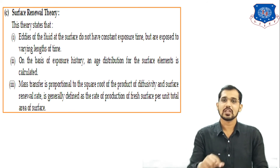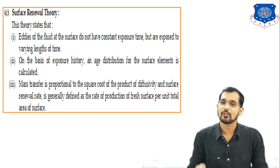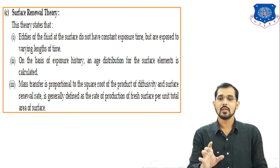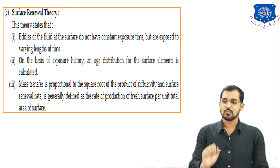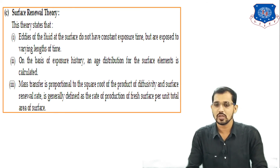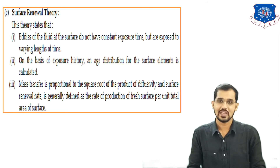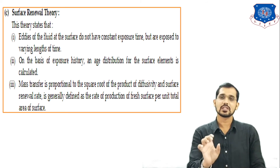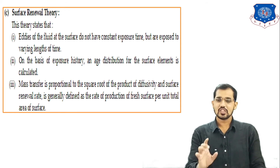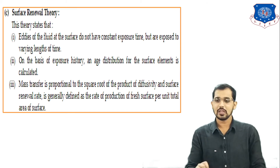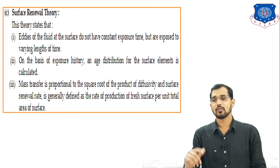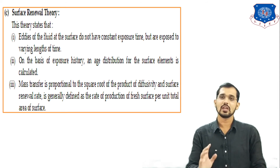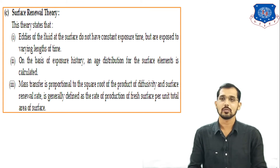Based on the exposure history, the age distribution for the surface element can be calculated. The mass transfer coefficient k is proportional to the square root of the product of diffusivity and the surface renewal rate s — that is, k ∝ √(DAB × s). The surface renewal rate s is defined as the rate of production of fresh surface per unit total area of the surface.